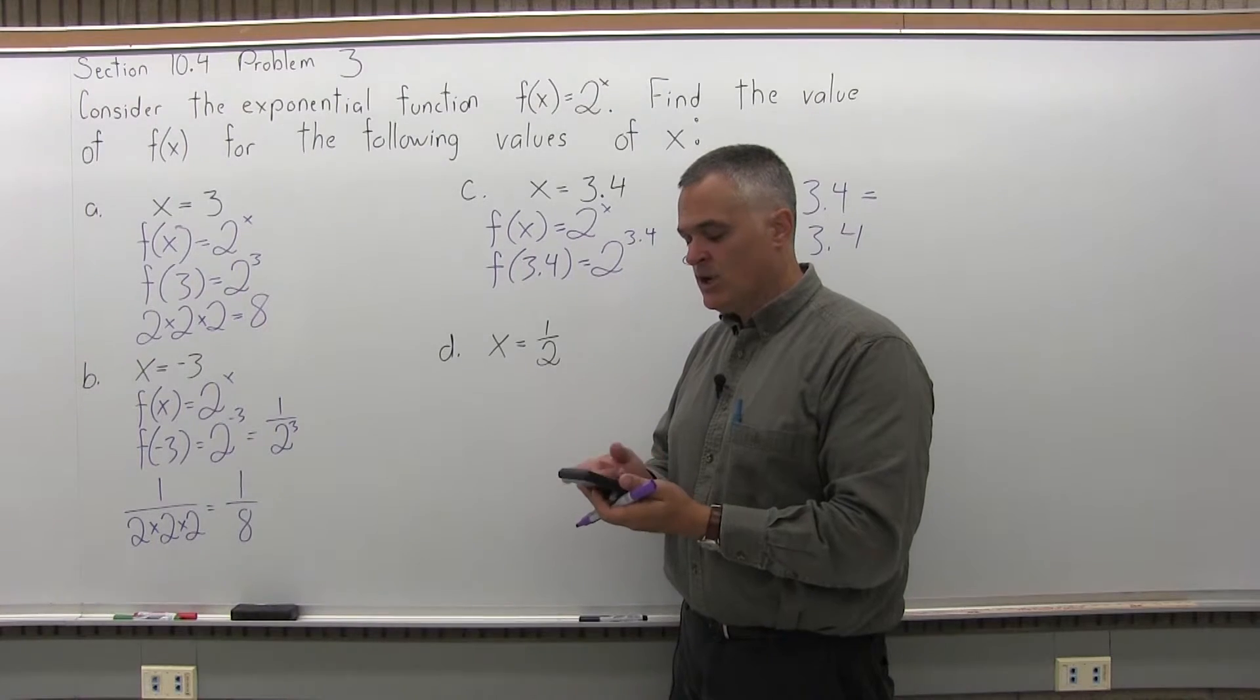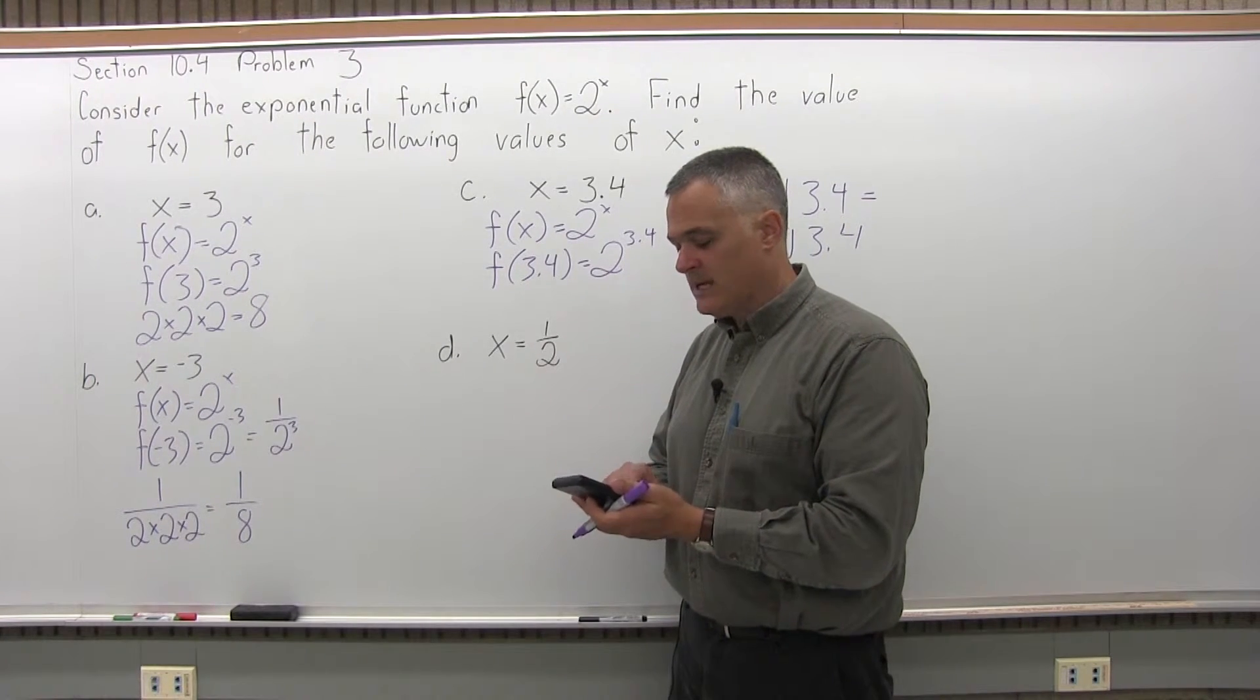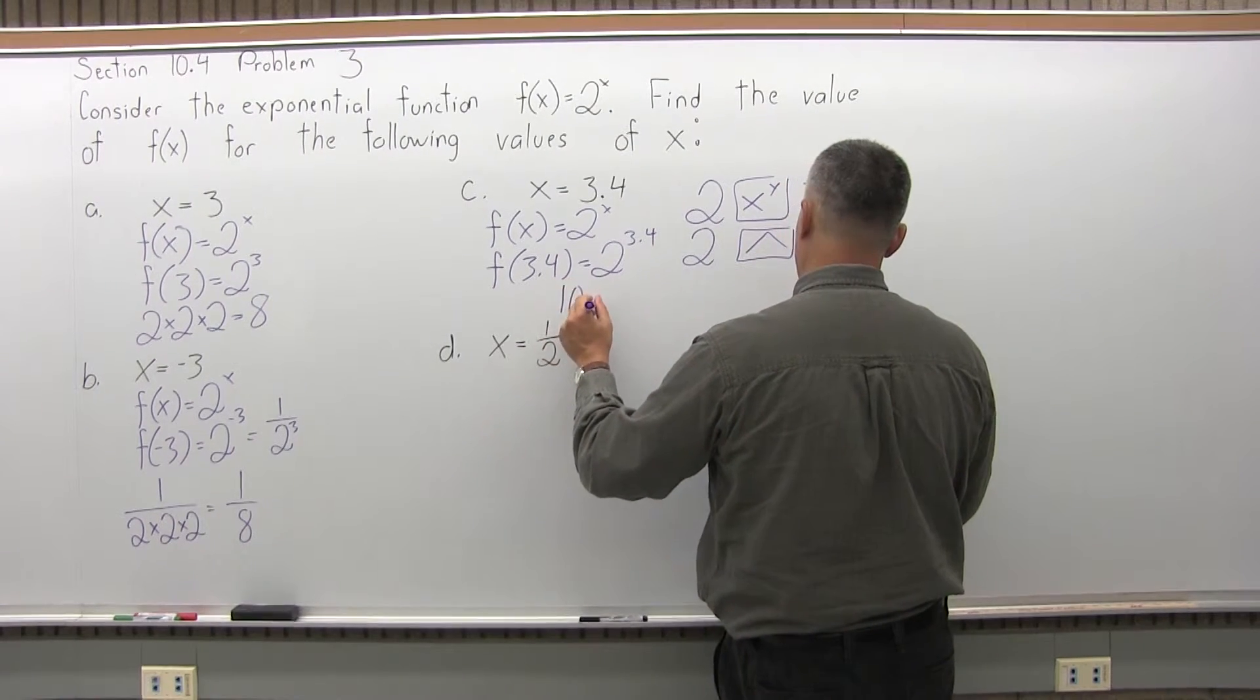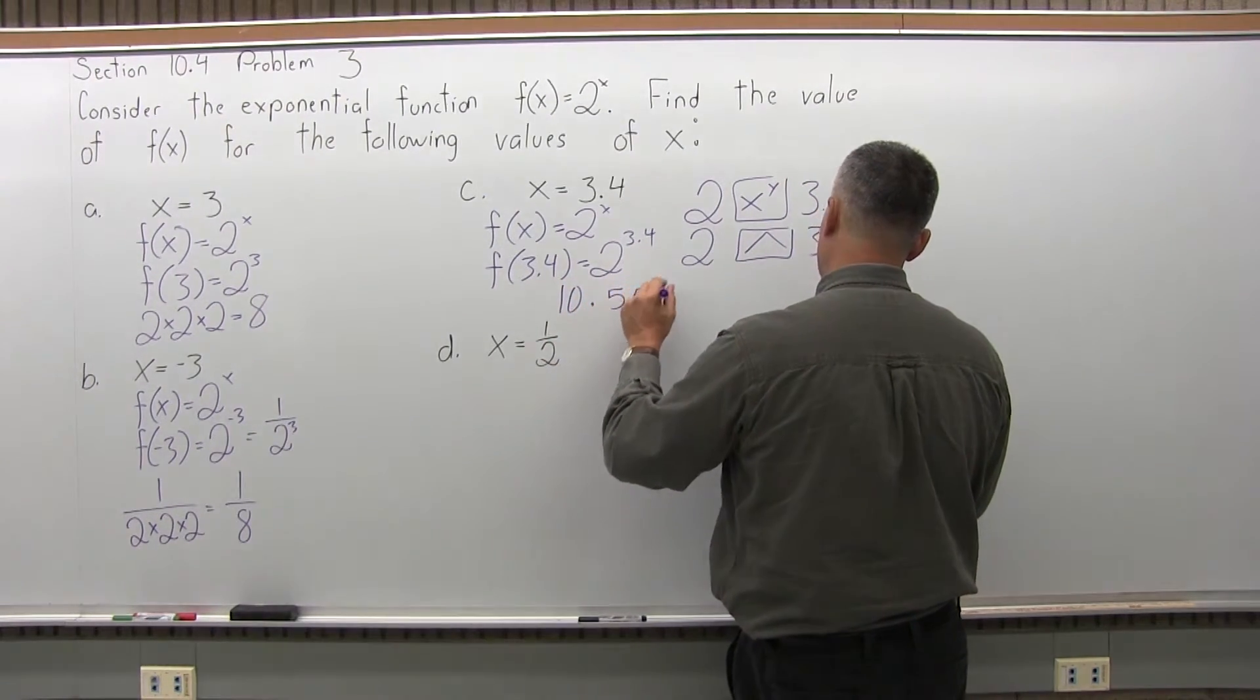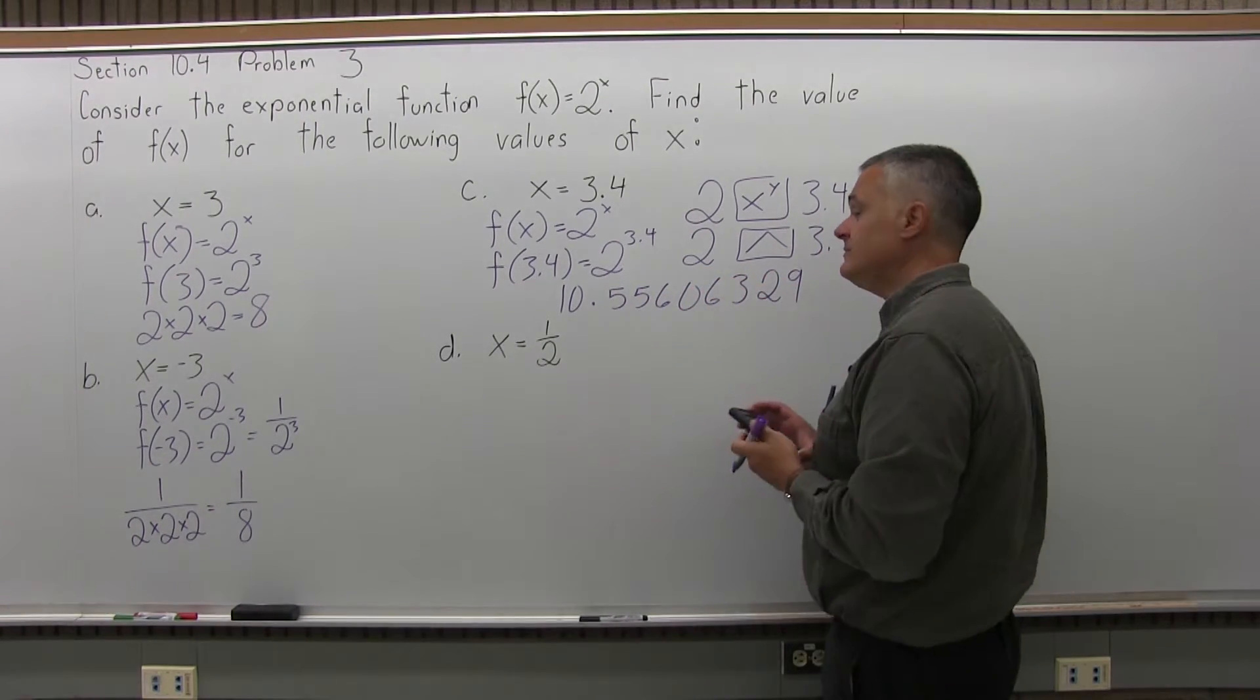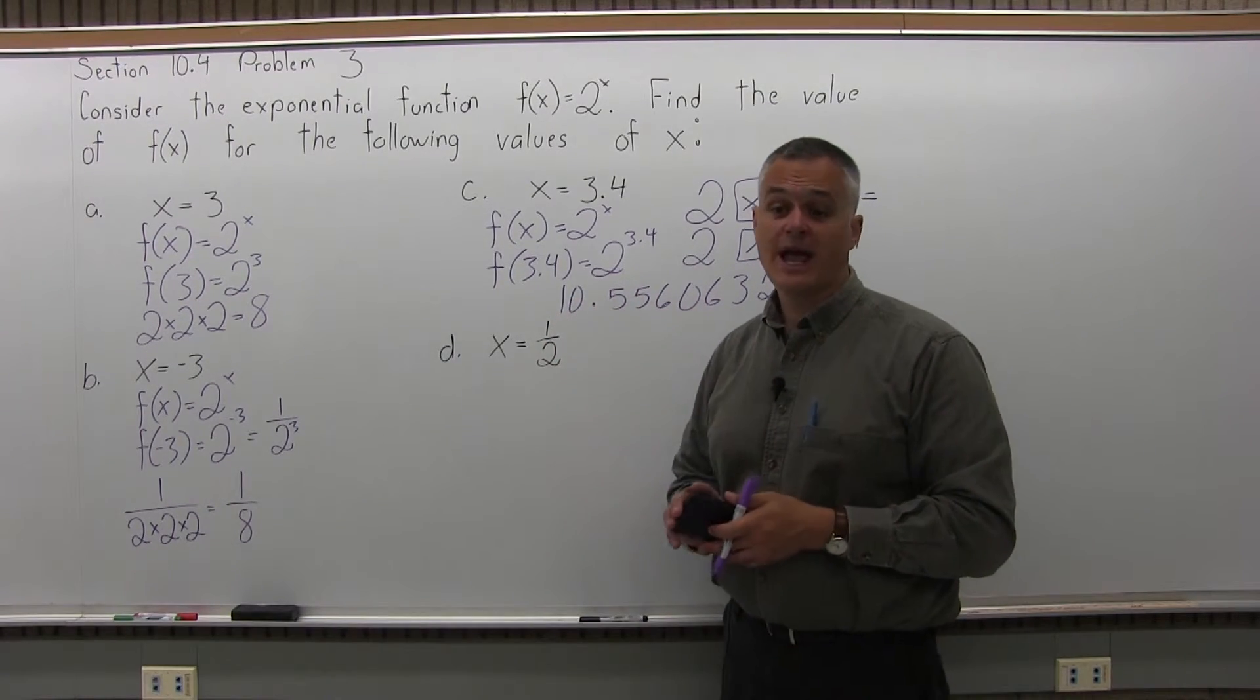So whichever version you have, I have my calculator here, I'll press 2, use the exponent button, put in the 3.4, hit equals. And the calculator tells me that the answer is 10.55606329. So 2 to the 3.4 power is a little bigger than 10 and a half.